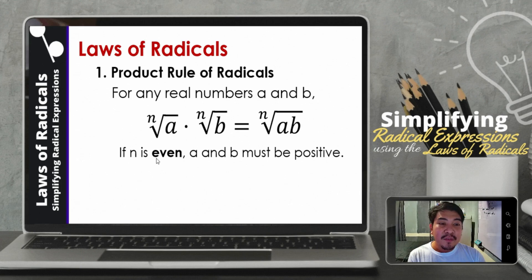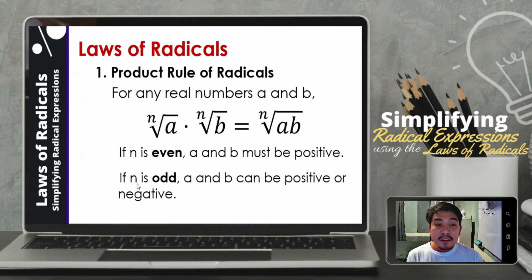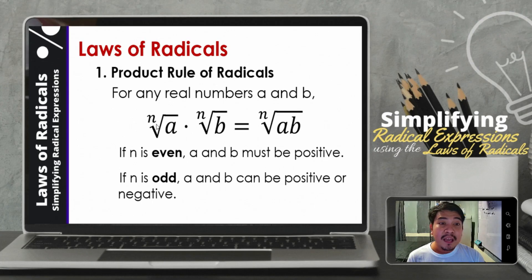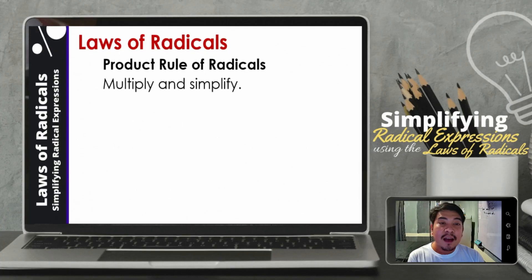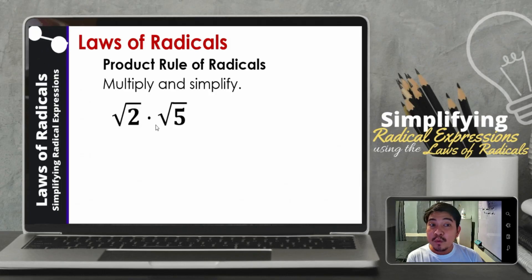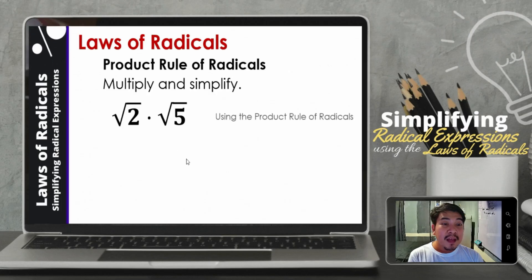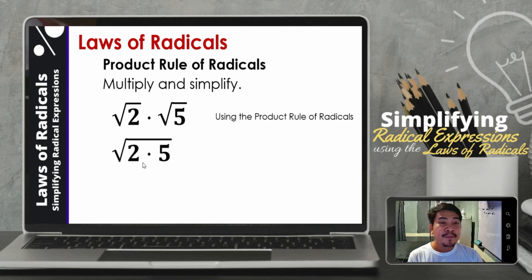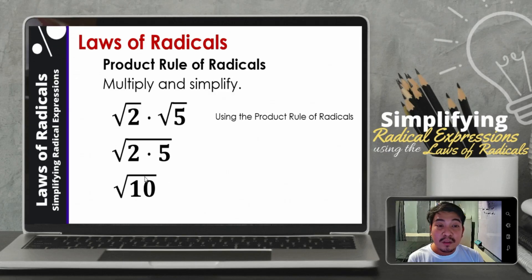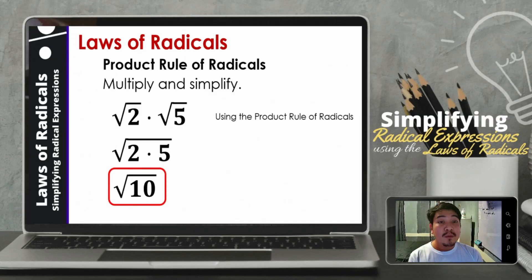Remember that we cannot get the root of a negative number if the index is an even number. So let us multiply and simplify the square root of 2 times the square root of 5. Since the indices are the same, we can multiply. Using the product rule of radicals, we combine them. So we now have the square root of 2 times 5. That will be the square root of 10. Since 10 is not a perfect square, the final answer will be the square root of 10.